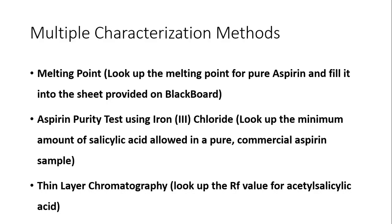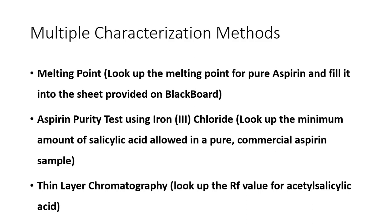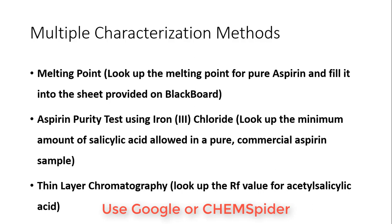You can also test the purity of the aspirin. One of the tests we use is iron chloride. On the handout it will ask about the minimum amount of salicylic acid allowed in a pure commercial aspirin sample — you can look that up using the link provided. Another way to characterize a compound is through thin layer chromatography or TLC. Look up the RF value for aspirin, acetylsalicylic acid — you should be able to find that using Google or ChemSpider.